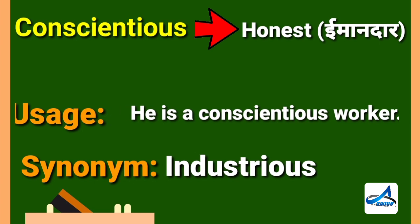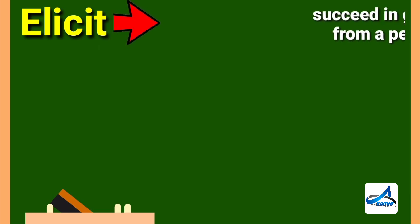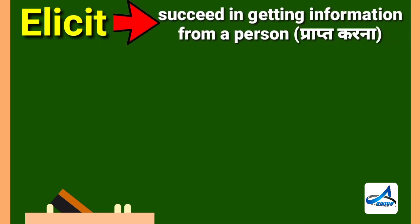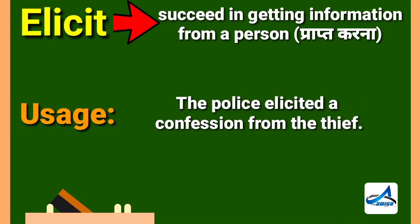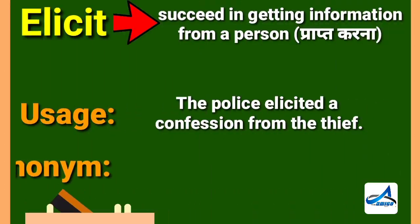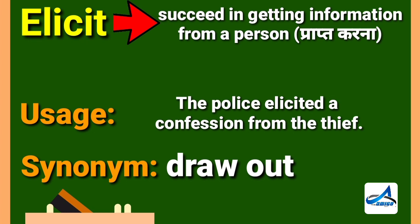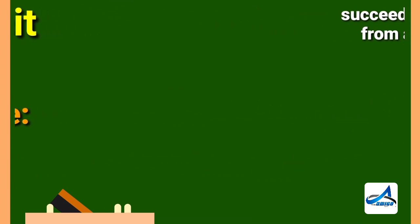The next word is elicit. Elicit means succeed in getting information from a person. In Hindi, you can say praap karna. Its example is, the police elicited a confession from the thief. Friends, confession means dosh svikriti. Its synonym is draw out.